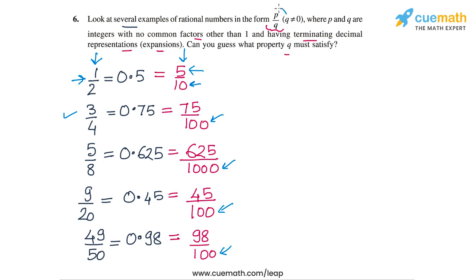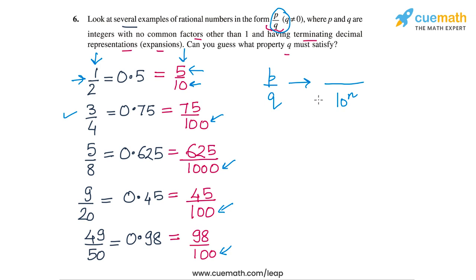This means that any rational number P by Q which can be written as an equivalent rational number with a denominator that's a power of 10 will have a terminating decimal representation. The question now is: when is this possible? For which rational numbers can we find equivalent rational numbers in which the denominators are powers of 10?